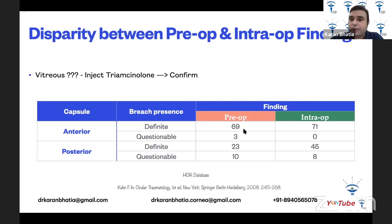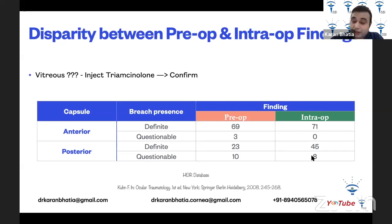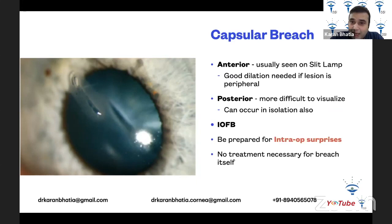From the HEIR database: if there's an anterior capsular breach, you find it intraoperatively most of the time. But if it's a posterior capsular breach, the study showed it was identified preoperatively 23 times but found intraoperatively 45 times — nearly twice as often. So you sometimes don't know whether the posterior capsule is intact or damaged. An anterior capsular breach requires slit lamp examination with good dilatation if the lesion is peripheral; a posterior lesion is more difficult to visualize and can occur in isolation.